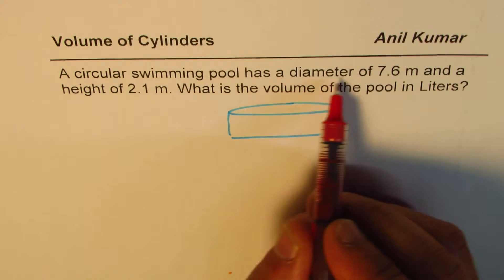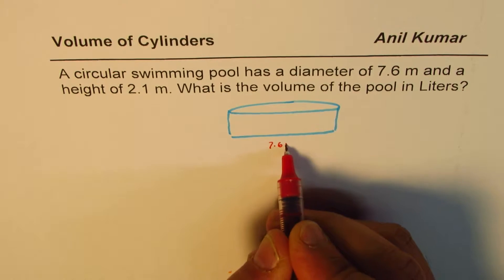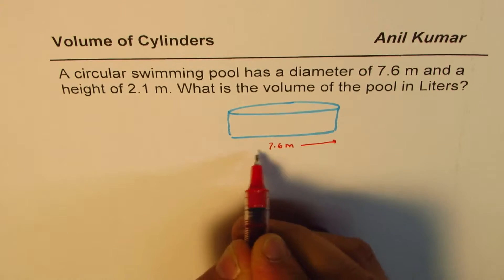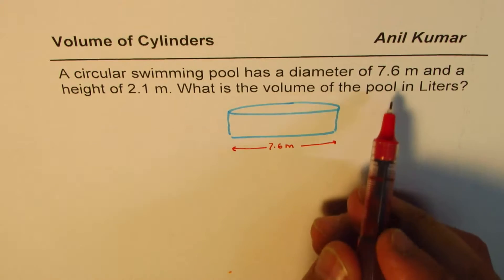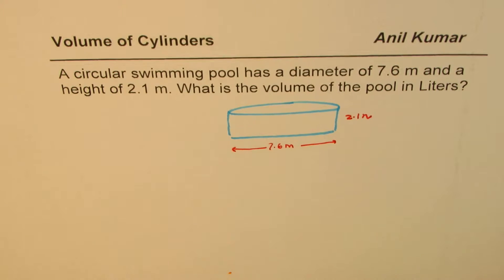It has a diameter of 7.6 meters, so 7.6 meters is the diameter of the circular pool, and the height is 2.1 meters. So that's the height for us.